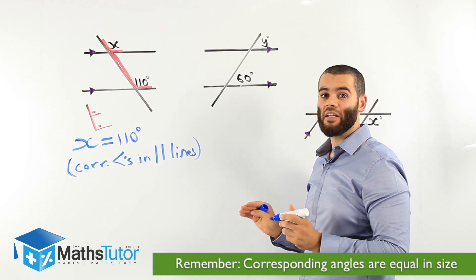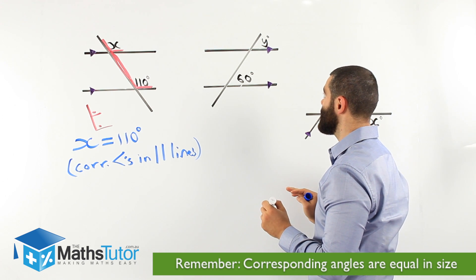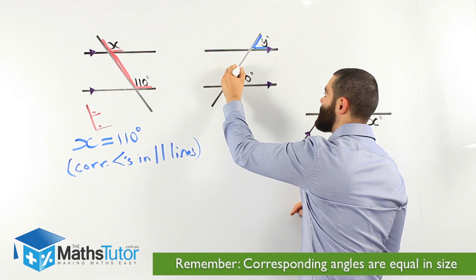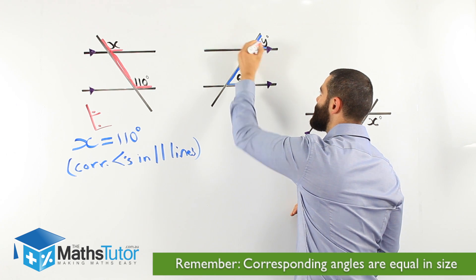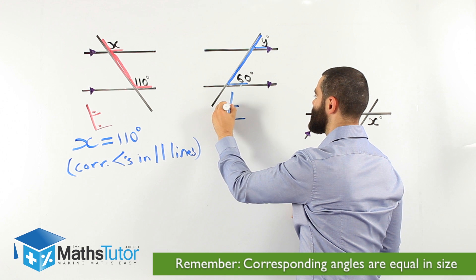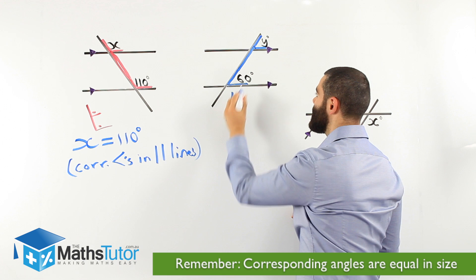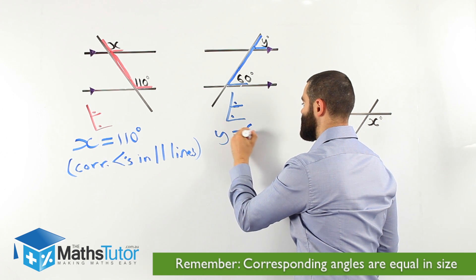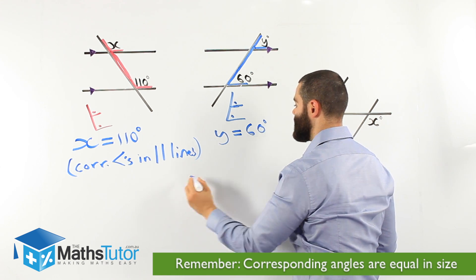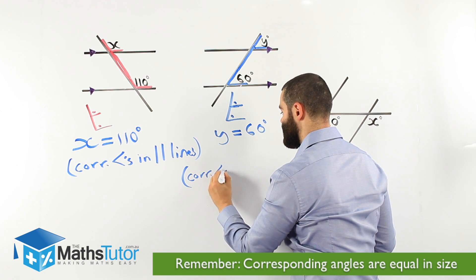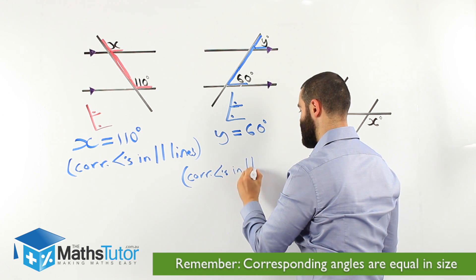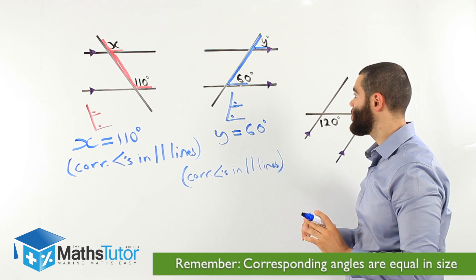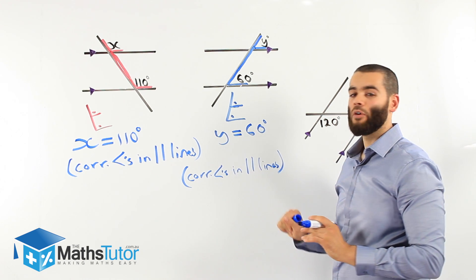Let's try another example. We have parallel lines and a transversal cutting through, and we are asked to find Y. Let's highlight this angle, let's highlight that angle, and connect them together. Do we make an F-looking shape? Yes, we have an F-looking shape upside down, where our angle is here and there. Corresponding angles are equal, therefore Y equals 60 degrees. And our reason — always write our reason: corresponding angles in parallel lines. Our answer and our reason are very important; we'll get full marks writing it like that.